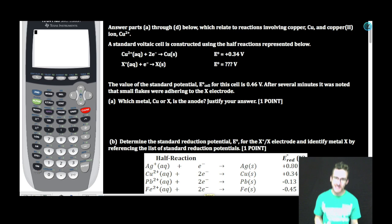It's another free response! These are what dreams are made of. Answer parts A through D below, which relate to reactions involving copper, Cu, and copper two ion, Cu two plus. A standard voltaic cell is constructed using the half reactions represented below. The value of the standard potential for this cell is 0.46 volts. After several minutes, it was noted that small flakes were adhering to the X electrode.